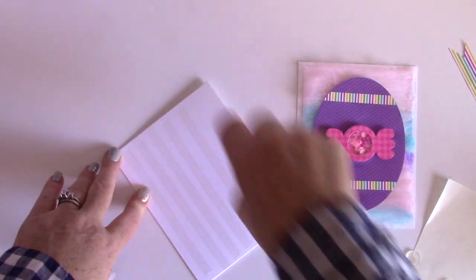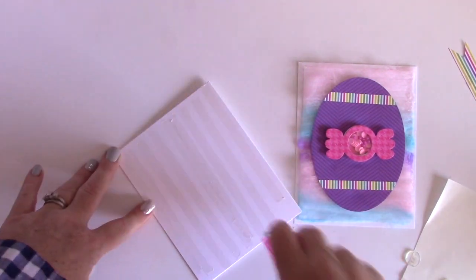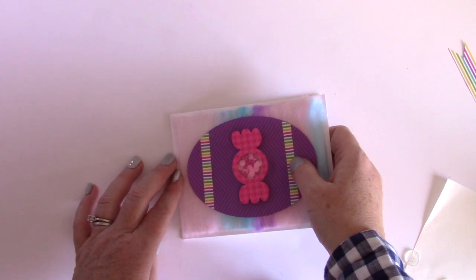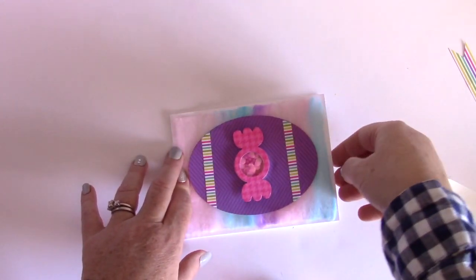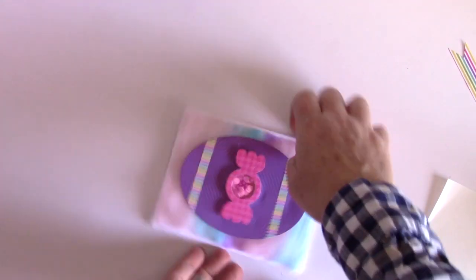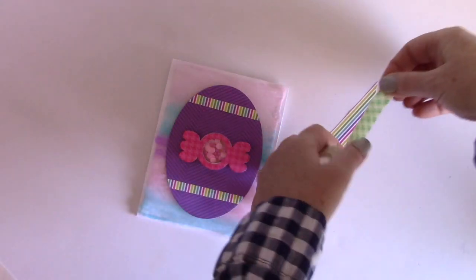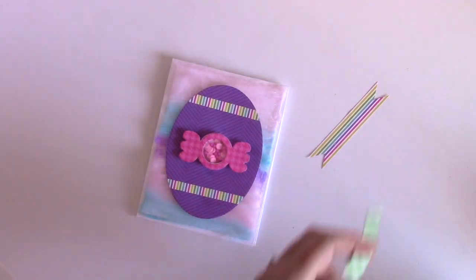Next I'm going to adhere this whole card panel down to a card base. This is a four and a quarter by five and a half inch top folding note card and I just want to line my white card panel with the cotton candy part all lined up on that card base.